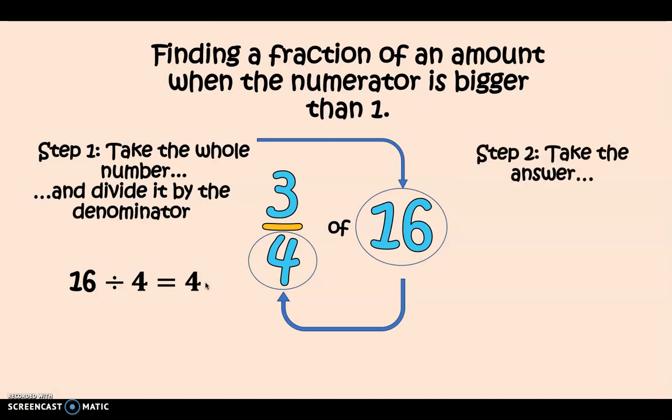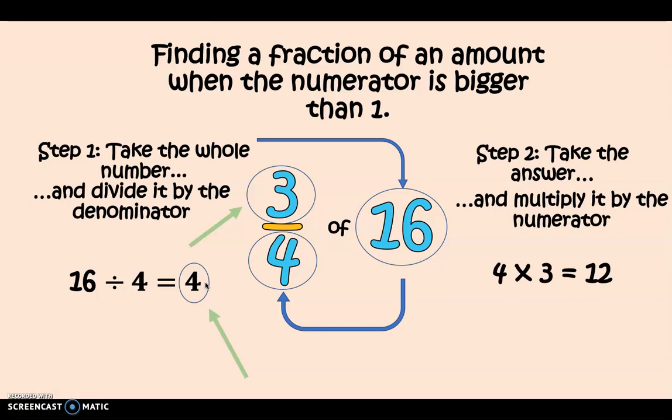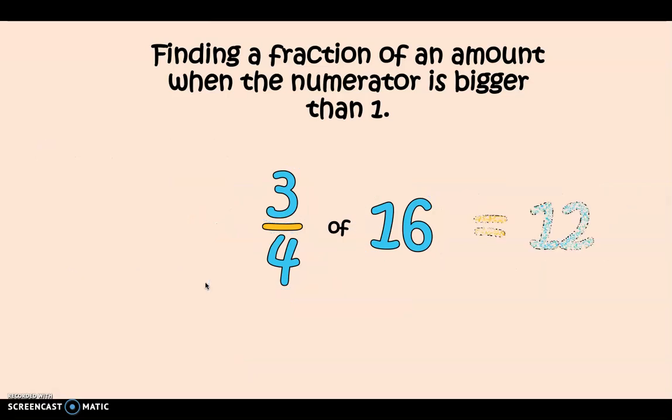So step two, take the answer that you just got. So in this case my answer is going to be 4. And then I'm going to multiply it by my numerator. So my numerator in this case is 3. 4 multiplied by 3 equals 12. So 3 quarters of 16 equals 12.